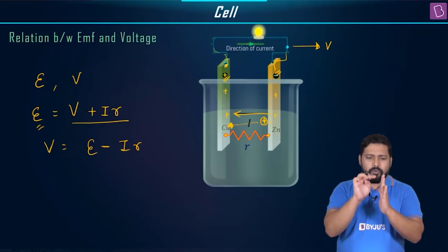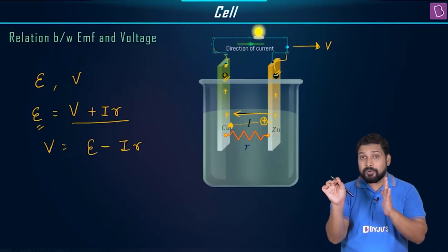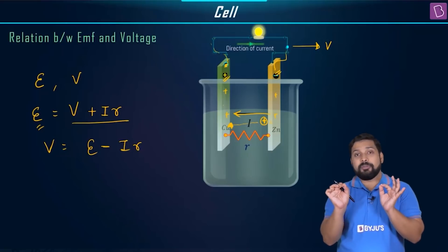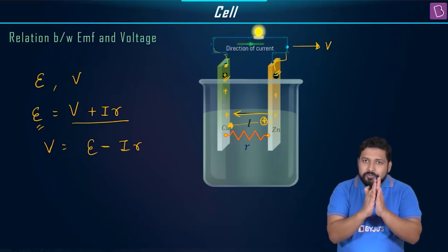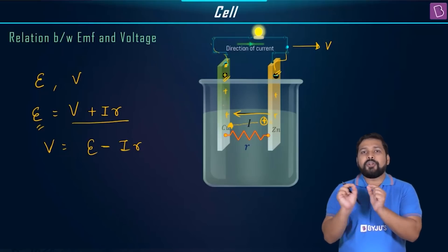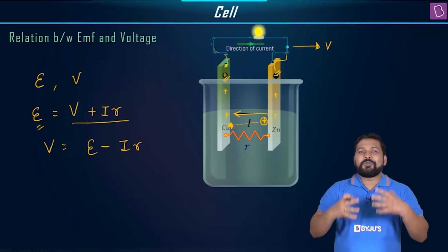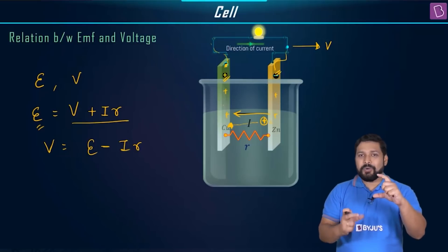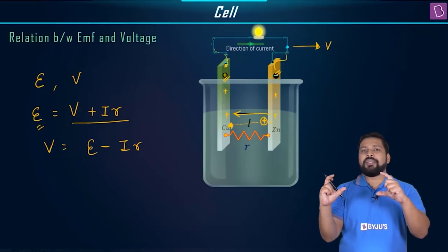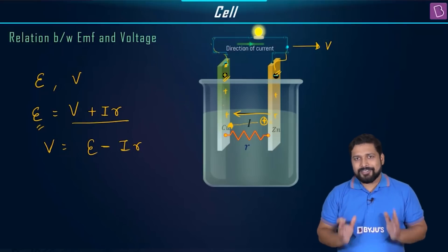Moving between the terminals externally is equal to the terminal potential V. As you move between the two electrodes, that equals I×r, because small r is the internal resistance. So the total work will be E = V + I×r.